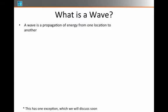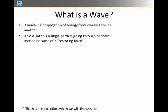First, we should say what a wave really is. A wave is a propagation of energy from one location to another. We can imagine a single oscillator going back and forth through periodic motion because of a restoring force. That could be, for example, a mass on a spring that oscillates back and forth. The spring constantly restores the mass toward the equilibrium point, but of course it overshoots and goes right through the equilibrium off to the other side, and it keeps bobbing back and forth.